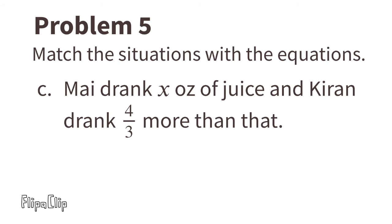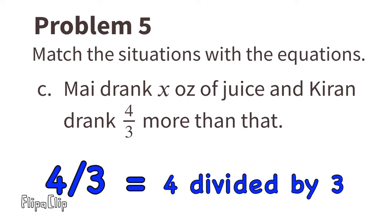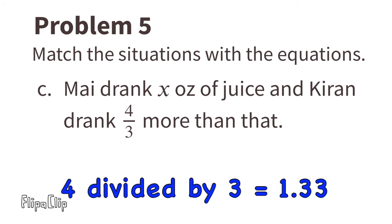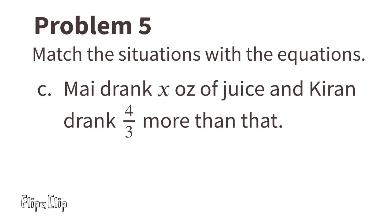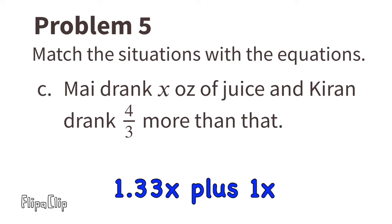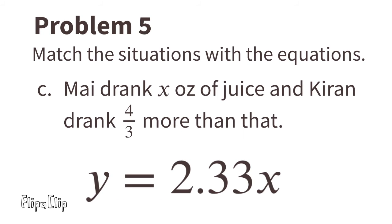Situation C: Mai drank x ounces of juice and Kieran drank four thirds more than that. Four thirds equals 1.333 repeating. Since Kieran drank four thirds more than Mai, we look at this as one and one third x, plus one x, which gives us the matching equation y equals 2.33x.